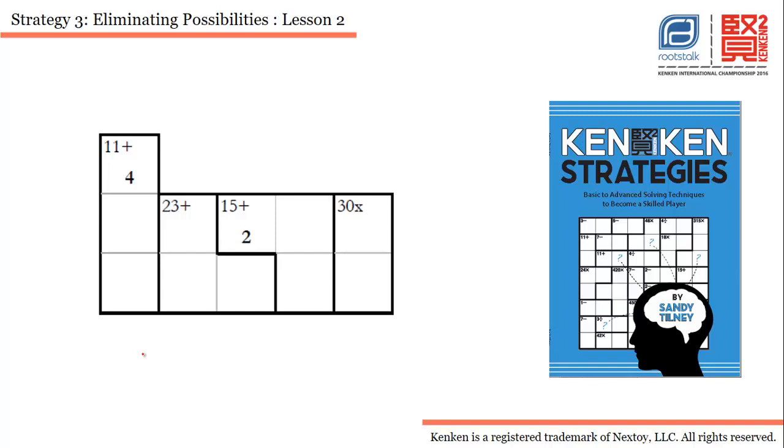Hello everyone, and welcome to lesson two of Strategy 3: Eliminating Possibilities. In this lesson, I have taken another example from the KenKen Strategies book, and in this particular problem we will try to solve as many cells as we can and see how eliminating possibilities can help us solve these puzzles faster.